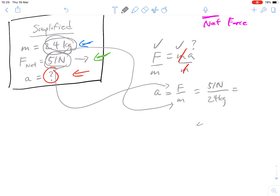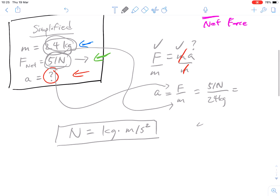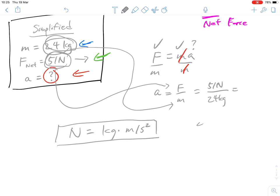And remember that a newton is kilograms times meters per second squared. We talked about this last time. This is a derived unit. A newton rather than writing all this, they want to simplify it. So a newton represents all of that. So I'm going to break that out. 51 kilograms times meters per second squared over 24 kilograms.